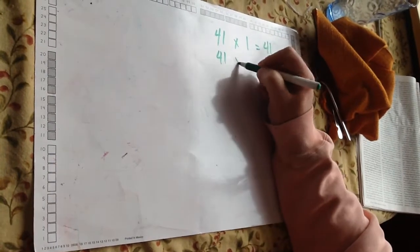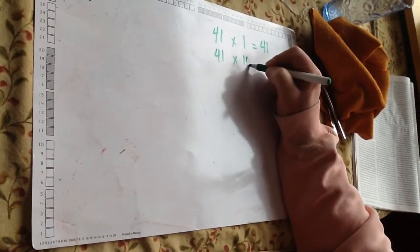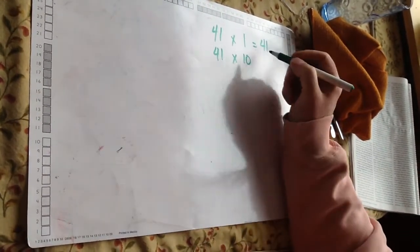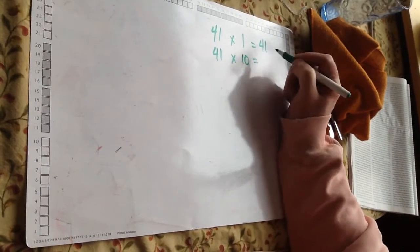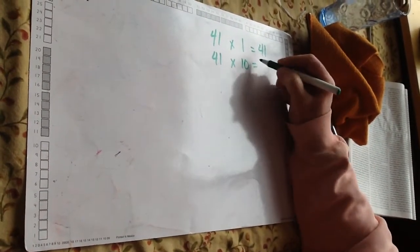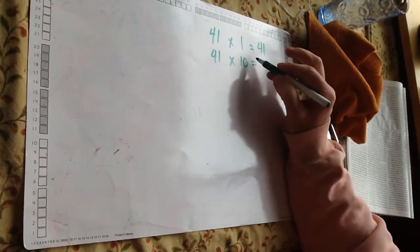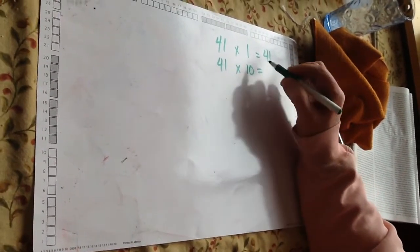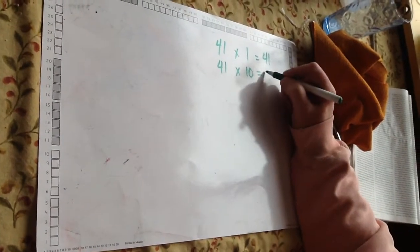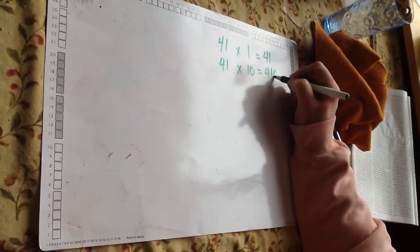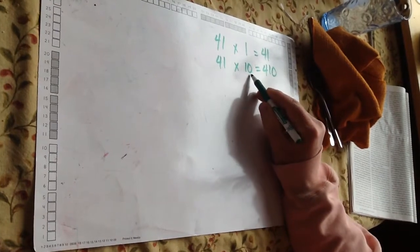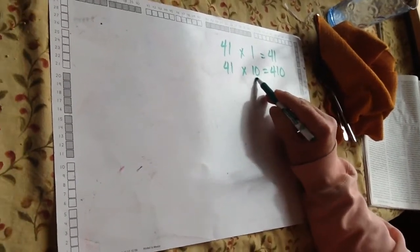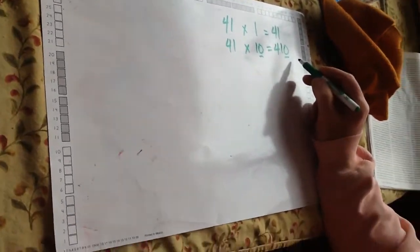Let's say that you want to find 10 groups of 41. A quick and easy way to do this is to count your zeros here in the problem. 10 groups of 41 is 410. There's one zero here, there's going to be one zero in my answer.